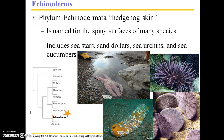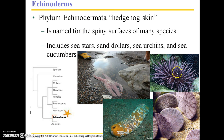Moving on to phylum Echinodermata — this phylum name literally means hedgehog skin, and it's named for the spiny surfaces of many species. It includes sea stars such as this stranded individual here on an Oregon beach, sand dollars, sea urchins, and sea cucumbers.